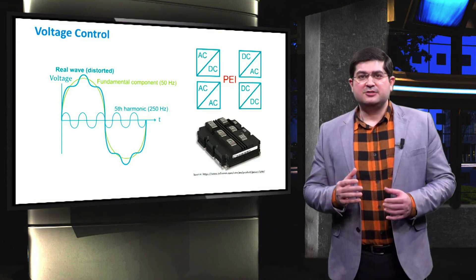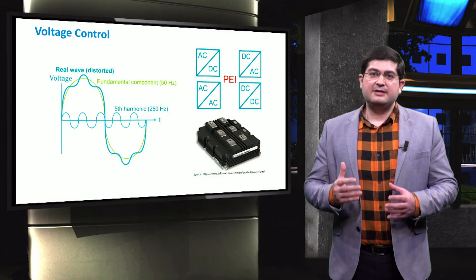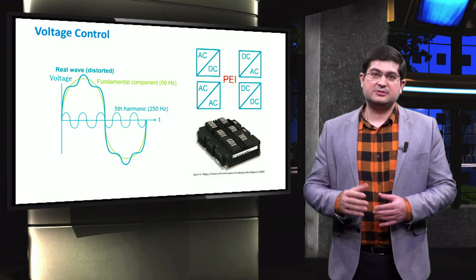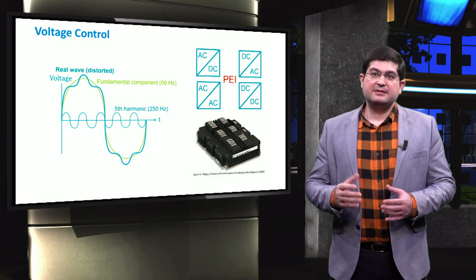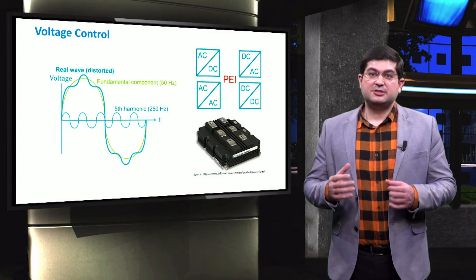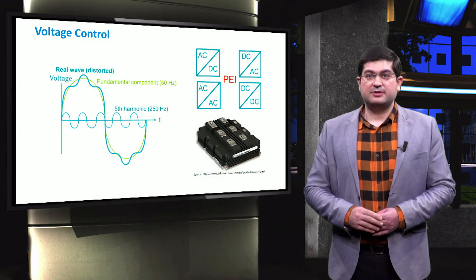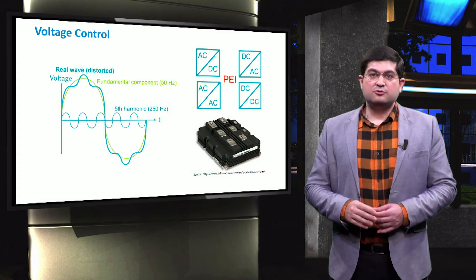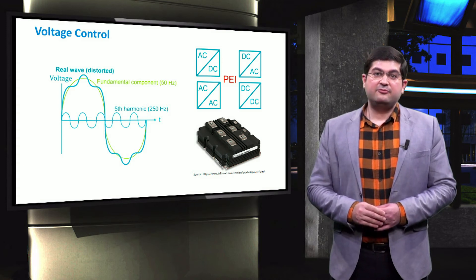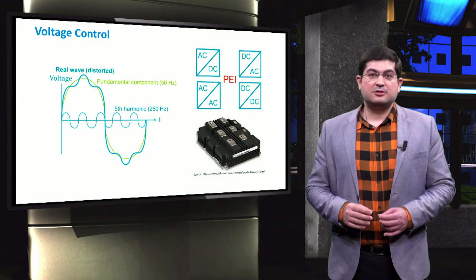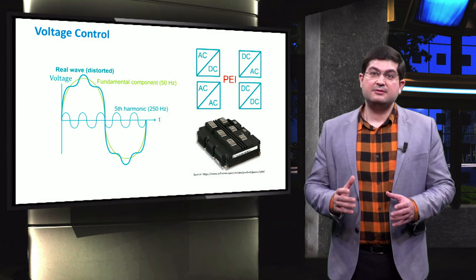With ever-increasing penetration rates of electronically interfaced units like PV solar, it is expected that problems associated with harmonics will be aggravated in microgrids in the future. To mitigate these problems, there will be a need for additional control schemes or fine-tuned filters.